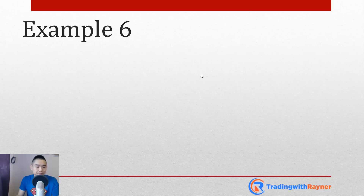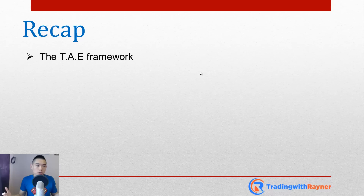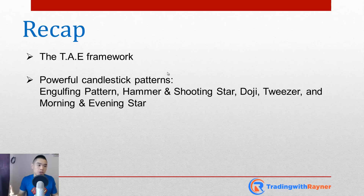Quick recap of what we've covered: the TAE framework — Trend, Area of Value, and Entry Trigger. Looking for these three things lets you find high-probability trading setups in bull and bear markets. The candlestick patterns to pay attention to: the engulfing pattern, hammer, shooting star, doji, tweezer tops and bottoms, and morning and evening star.